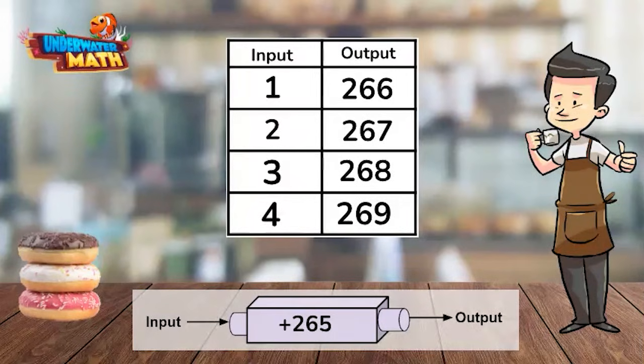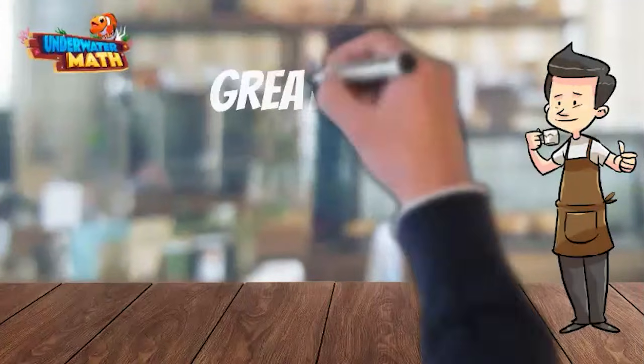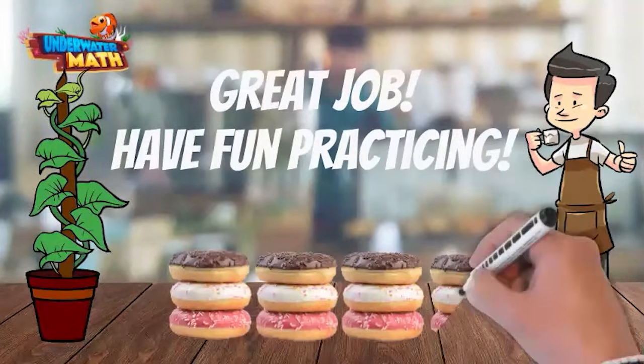Let's check the remaining inputs. 2 plus 265 is equal to 267, 3 plus 265 is equal to 268, and 4 plus 265 is equal to 269. Great job. You are ready to practice on your own. Have fun.